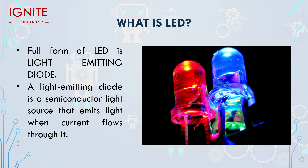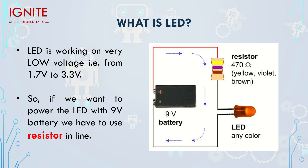Now, what voltage does an LED work on? An LED works on a very low voltage — from 1.7 volts to 3.3 volts.